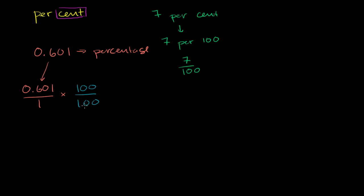Obviously, this won't change the value. This is just 1 here. But what this does is it'll give us a fraction with the denominator being 100. So the denominator, if I multiply these two characters right over here in the denominator, the denominator of our product is going to be 100.